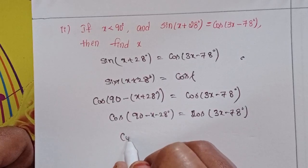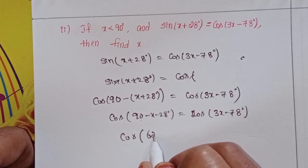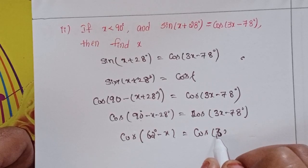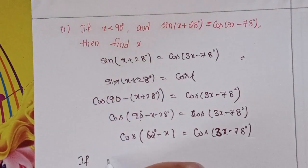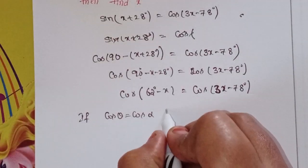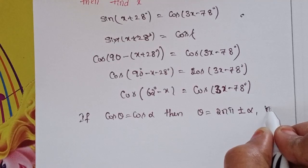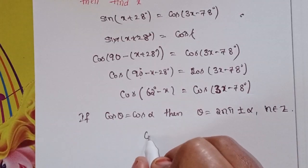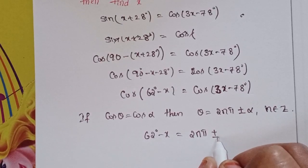So we get cos(62° - x) = cos(3x - 78°). Using the identity: if cos θ = cos α then θ = 2nπ ± α, where n belongs to Z. So 62° - x = 2nπ ± (3x - 78°).